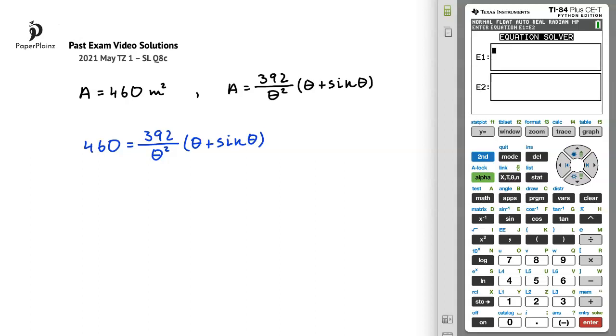In box E1 I will enter the left hand side, so 460, and in box E2 I will enter the right hand side. I will start by creating a fraction, so alpha, y, and enter. In the numerator, we have 392, and using x for theta in the denominator, we get x squared.